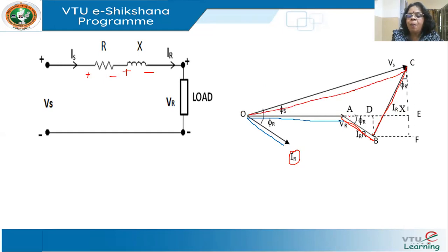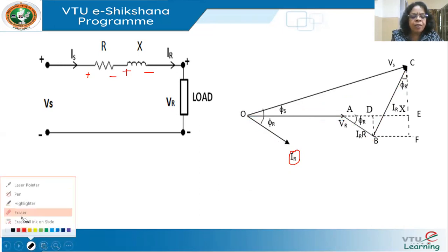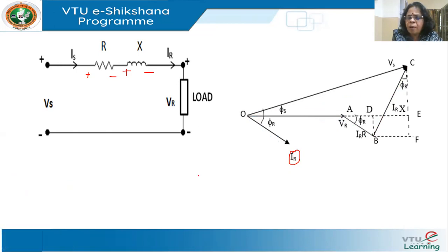So VS = VR + IR·R + IR·X. You can now see how simple it is to draw the phasor diagram — not at all complicated, no need to memorize it.